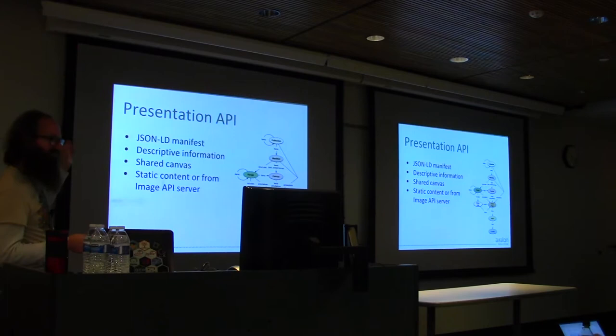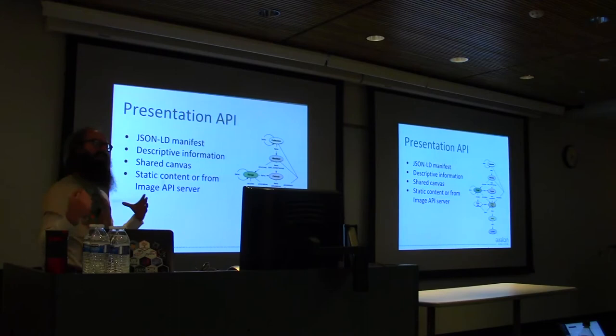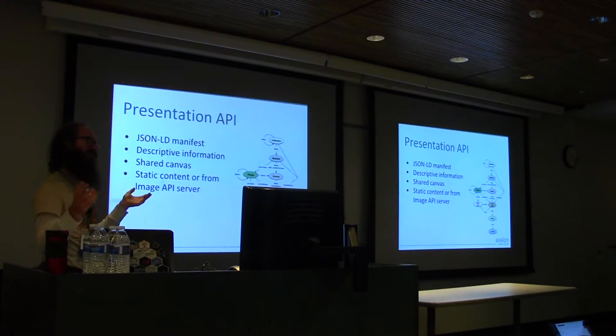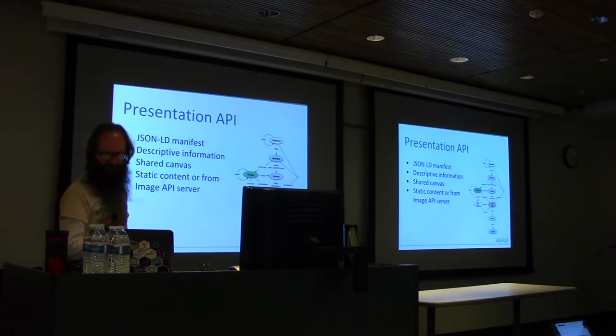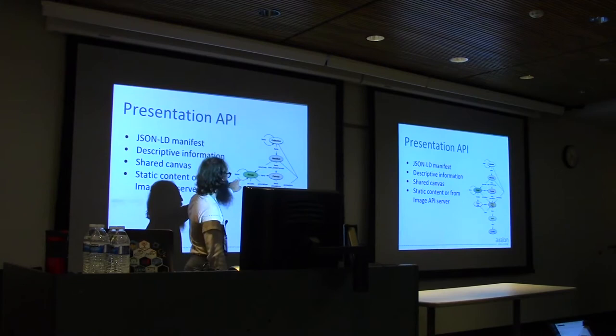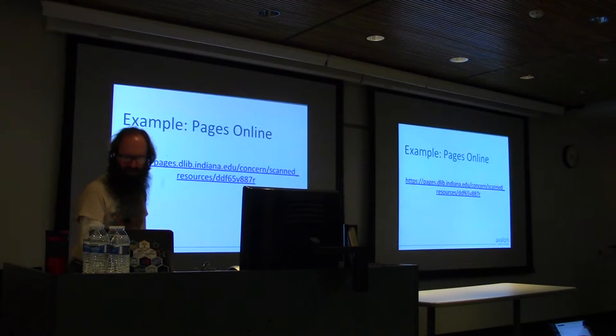The presentation API is really around a JSON manifest with descriptive information. A key concept it introduces is a shared canvas — a canvas that content gets painted onto. Generally that's images, but it could be multiple images, enabling that rejoining of the manuscript into one view. Here's an entity diagram where a collection has manifests, manifests have canvases, canvases have annotations, and there's structural metadata. This is the diagram for the Presentation 3.0 manifest API.